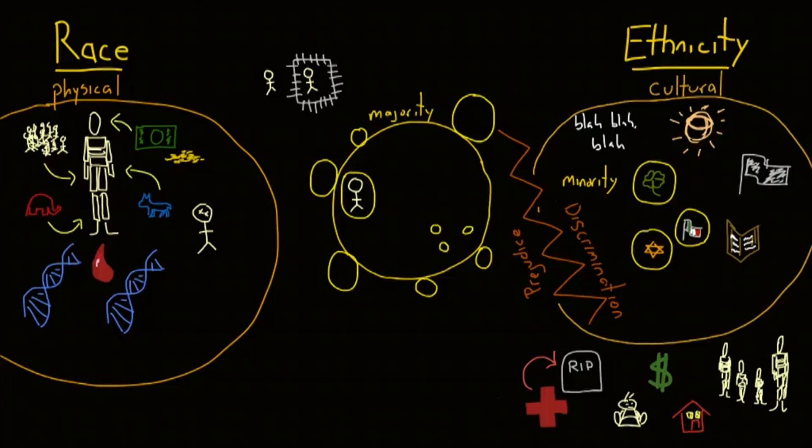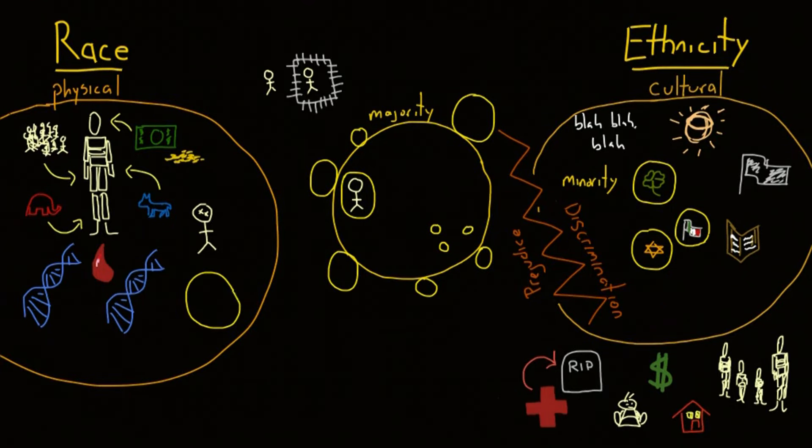Throughout history, dominant groups have racialized minority groups. This means the dominant group ascribed some racial identity to members of a minority group that they did not identify for themselves.